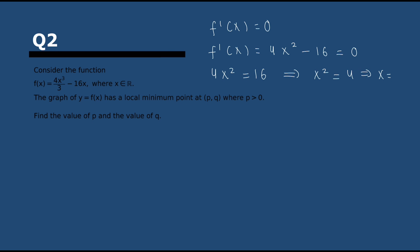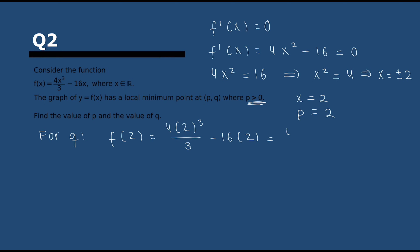We then make it equal to 0, and x is equal to plus or minus 2. But p, remember, is positive, so it has to be 2. And then to find q, since q is the y-coordinate, we can substitute p into the function. So 4 times 2 to the power of 3 over 3, minus 16 times 2. We simplify: 4 times 8 over 3 minus 32, giving 32 over 3 minus 96 over 3, which is minus 64 over 3. That is q.